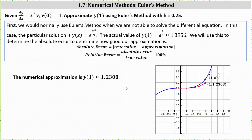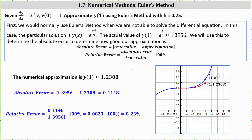To determine the absolute error and the relative error: the absolute error equals the absolute value of the difference between the true function value and the approximation, which in our case is 0.1148. The relative error is often a better indication of whether the error is acceptable. It equals the absolute error divided by the absolute value of the true value, converted to a percentage, giving approximately 8.23%. If up to 10% error is acceptable, then our approximation would be acceptable.